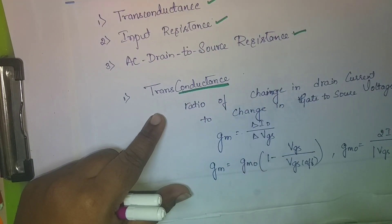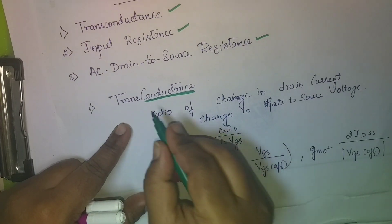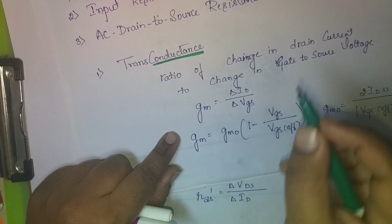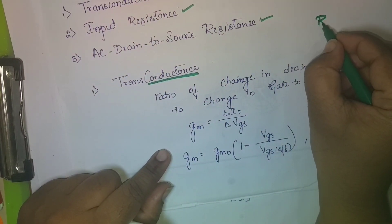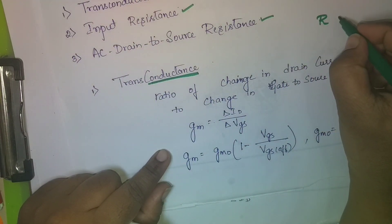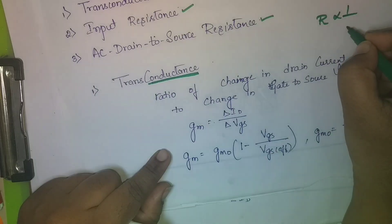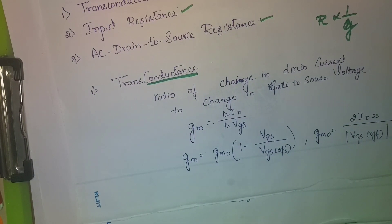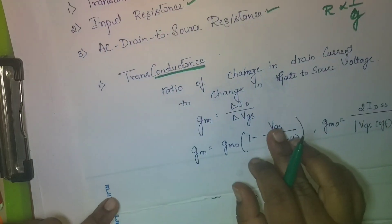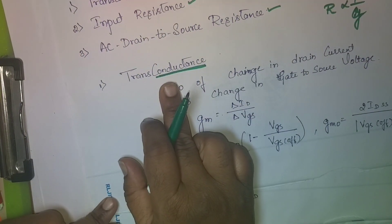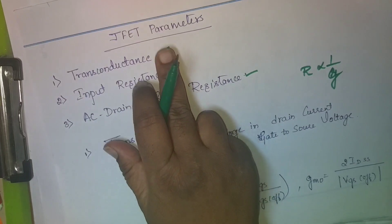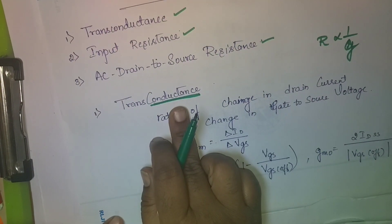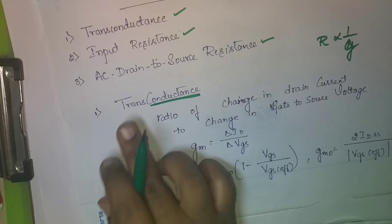Conductance is the reciprocal of resistance. Conductance is represented as g. We know that resistance is represented as R, and resistance is inversely proportional to conductance. With respect to JFET, this parameter is called transconductance.